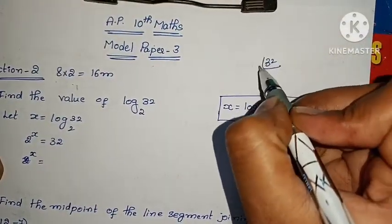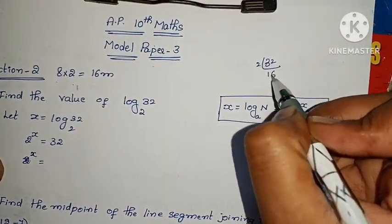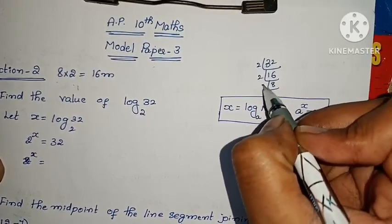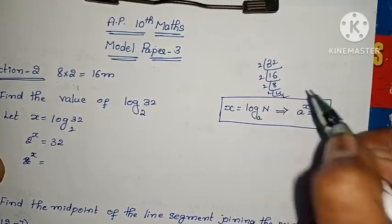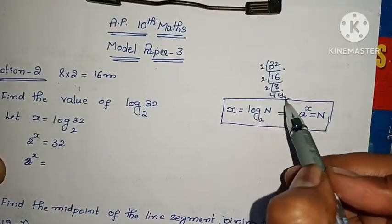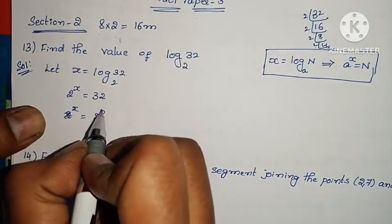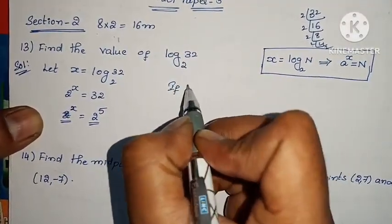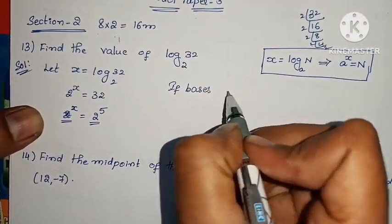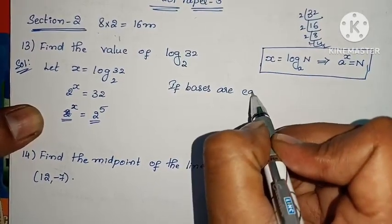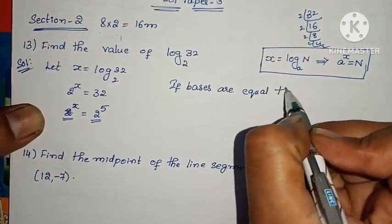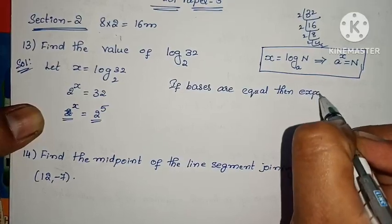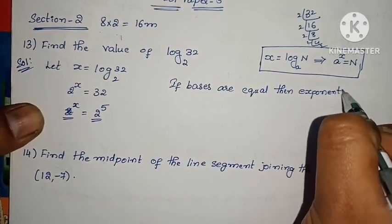Now let's write 32 as a power of 2. 2 to the 1 is 2, 2 to the 2 is 4, 2 to the 3 is 8, 2 to the 4 is 16, 2 to the 5 is 32. So 2 power x equals to 2 power 5. If bases are equal, then exponents are equal.